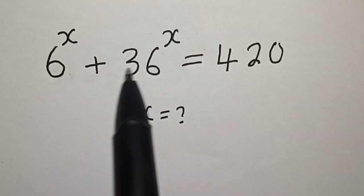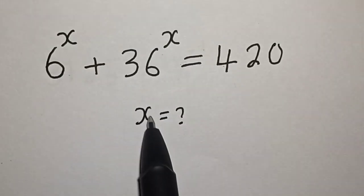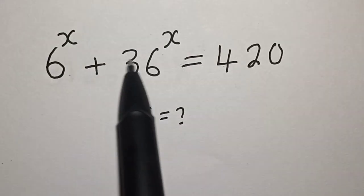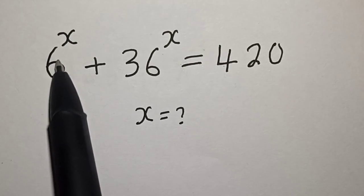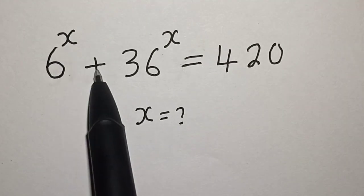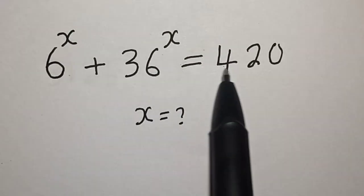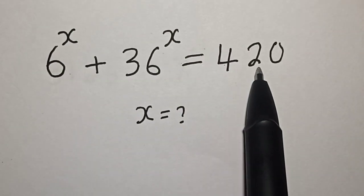Hi everyone, welcome to my class. In this class, we want to find the value of s from this given equation: 6 raised to power s plus 36 raised to power s is equal to 420.